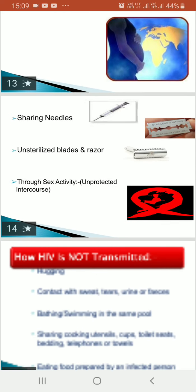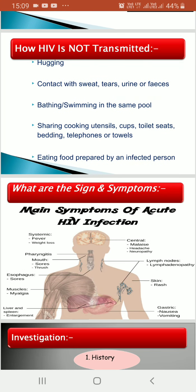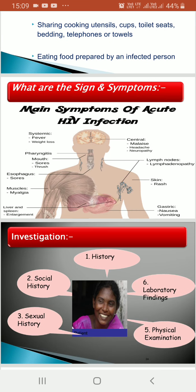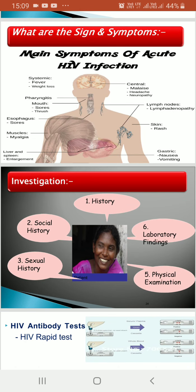How HIV is NOT transmitted — there is a stigma and people don't know how it spreads or doesn't spread. HIV does not spread through hugging, contact with sweat, tears, urine or faeces, bathing, swimming in the same pool, sharing cooking utensils, cups, toilet seats, bedding, telephone, towels, or eating food prepared by an infected person.